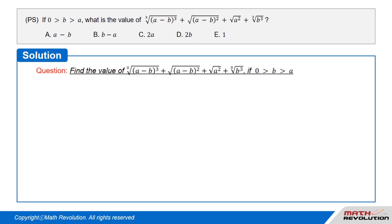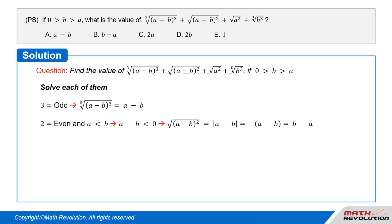We have to find the value of the expression given that 0 is greater than b is greater than a. Let's solve each term. Since 3 is odd, cube root of the whole cube of (a minus b) equals a minus b.